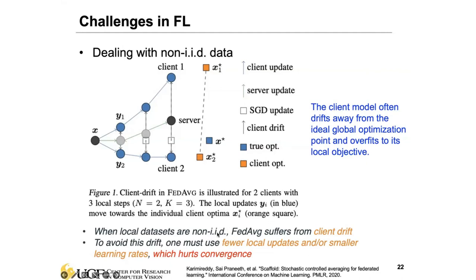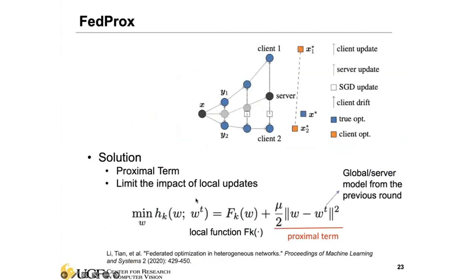The downside of these solutions is that they hurt convergence speed — you need more federated training rounds to converge because each time you limit model updates or use a smaller learning rate, convergence slows down. To address this, researchers have explored other strategies that prevent client drift without suffering slow convergence speed.